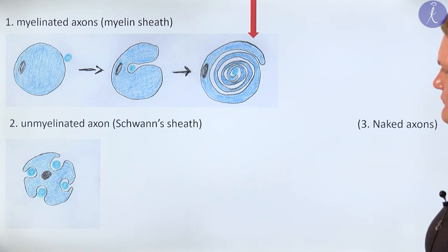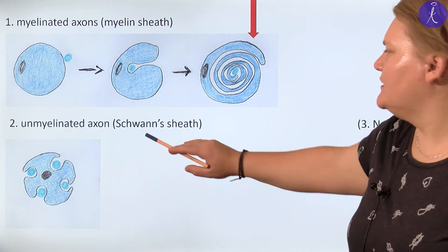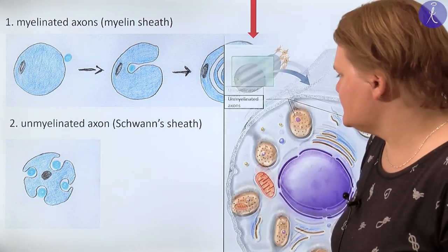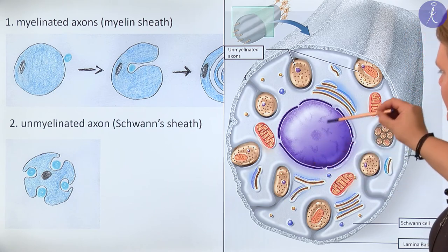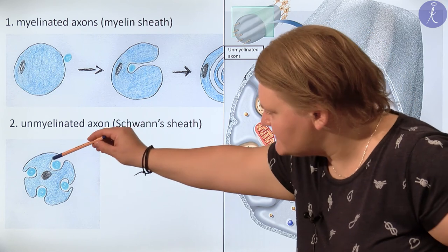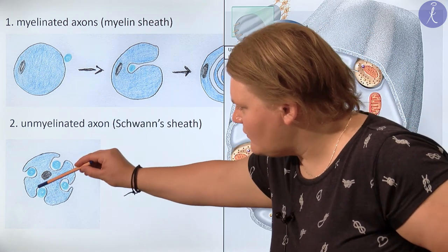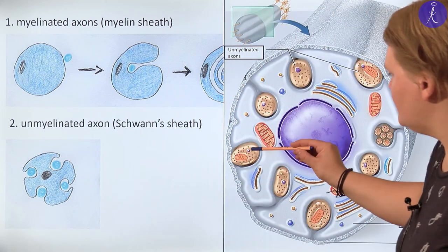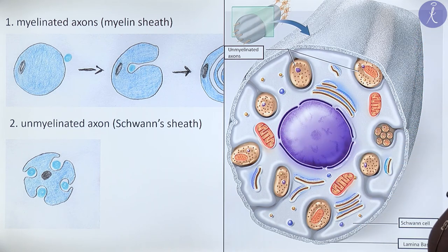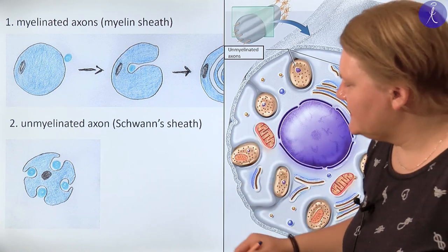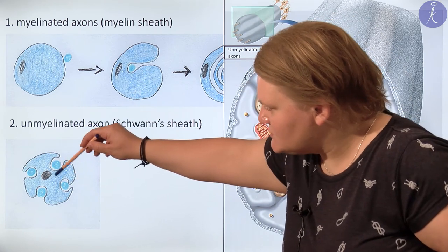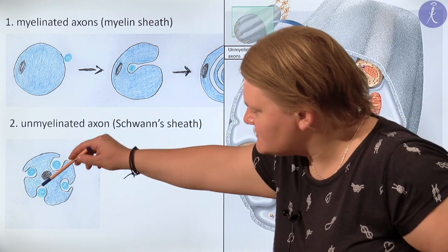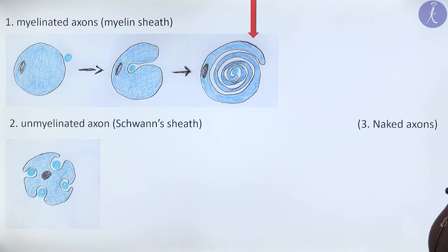The next type of axon is the unmyelinated axon, also called the Schwann sheet. In this case we have just one Schwann cell — visible here with a basophilic nucleus — and on its surface there are multiple clefts, each containing an axon. So the difference compared to the myelin sheet is that we do not have multiple layers around the axons, and we have multiple axons sharing one Schwann cell. We also know of naked axons, but these are not detailed today.